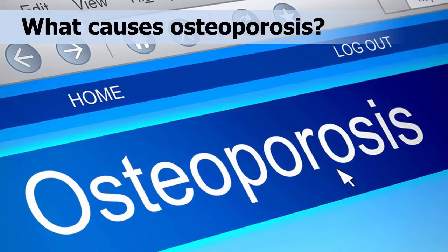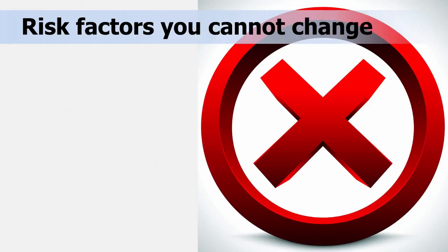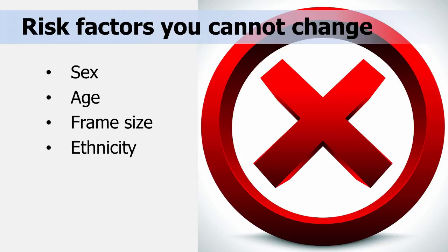What causes osteoporosis? There are many risk factors that can lead to bone loss and osteoporosis. Some are controllable and others are not. There are five main risk factors associated with osteoporosis that you cannot change: sex, age, frame size, ethnicity, and family history. Let's take a look at these risk factors.